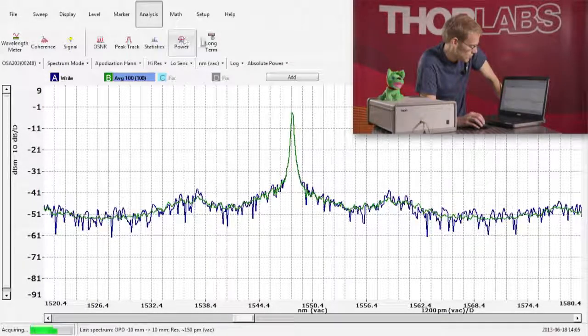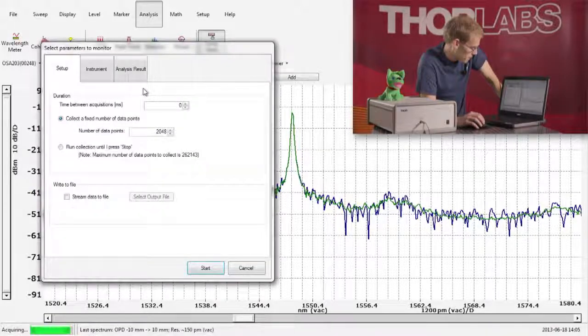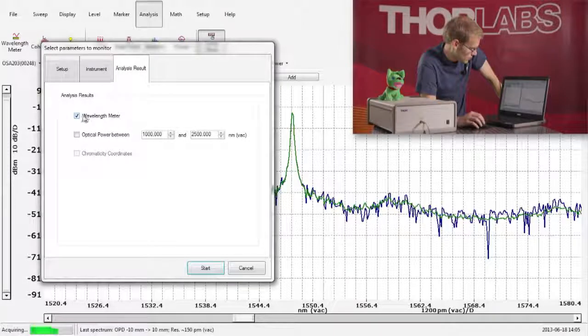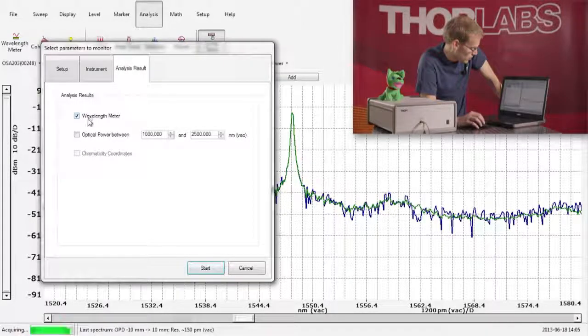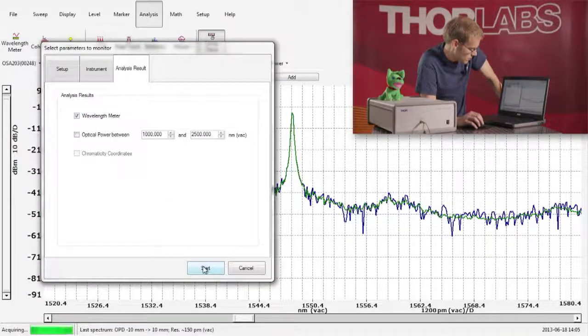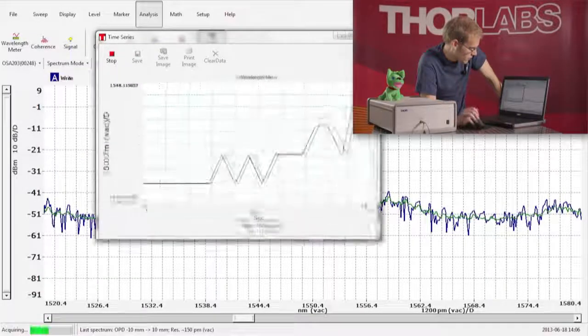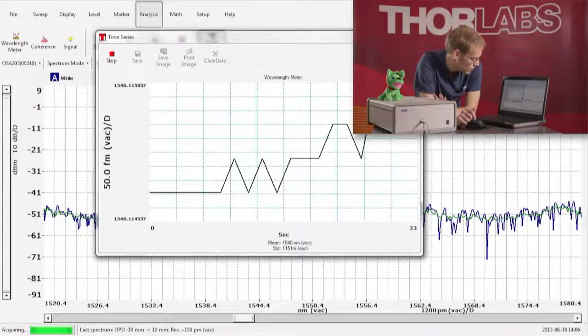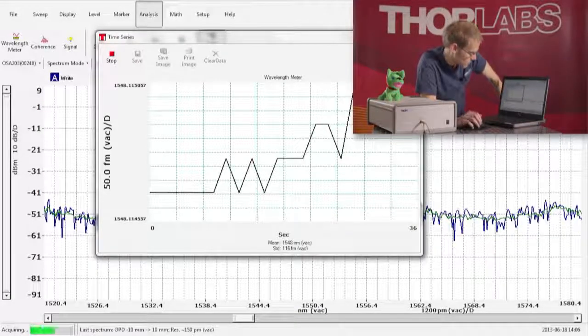In the analysis menu, go to the long-term button and select the parameter that you wish to monitor. For example, I can monitor the wavelength metering results, press start and we will get a continuously updating measurement of the wavelength meter analysis results.